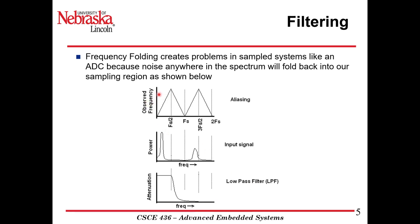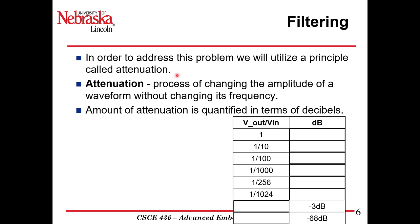As we look at observed frequencies, Fs is the sampling rate and Fs over 2 is our observed frequency limit. In order to address this aliasing problem, we utilize a principle called attenuation — that's how filters work. They attenuate the signal to change the amplitude of the waveform without changing its frequency. The amount of attenuation is quantified in decibels.